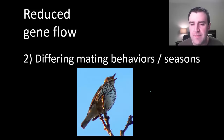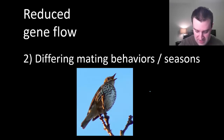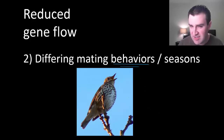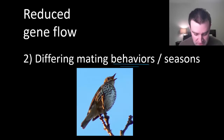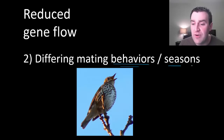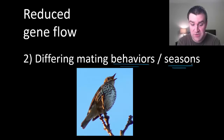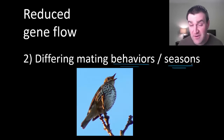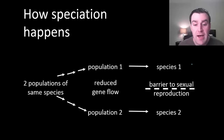Another interesting example is that two populations can become different species even in the same location if they develop differences in mating behaviors. In the case of songbirds, they might start to sing different songs such that males of one group don't attract females from the other group, so they don't reproduce with each other and continue to accumulate genetic differences. This also applies if organisms have different mating seasons — for example, a group of plants might eventually become a different species if one group flowers in May while another flowers in late June.